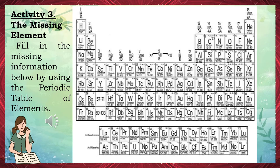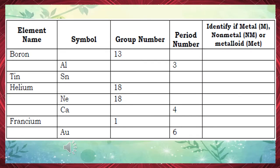Activity 3: The Missing Element. Fill in the missing information using the periodic table of elements — element name, symbol, group number, period number, and identity (M for metal, NM for nonmetal, MET for metalloid). Number 1: The element symbol is B, period number is 2, and it is a metalloid.